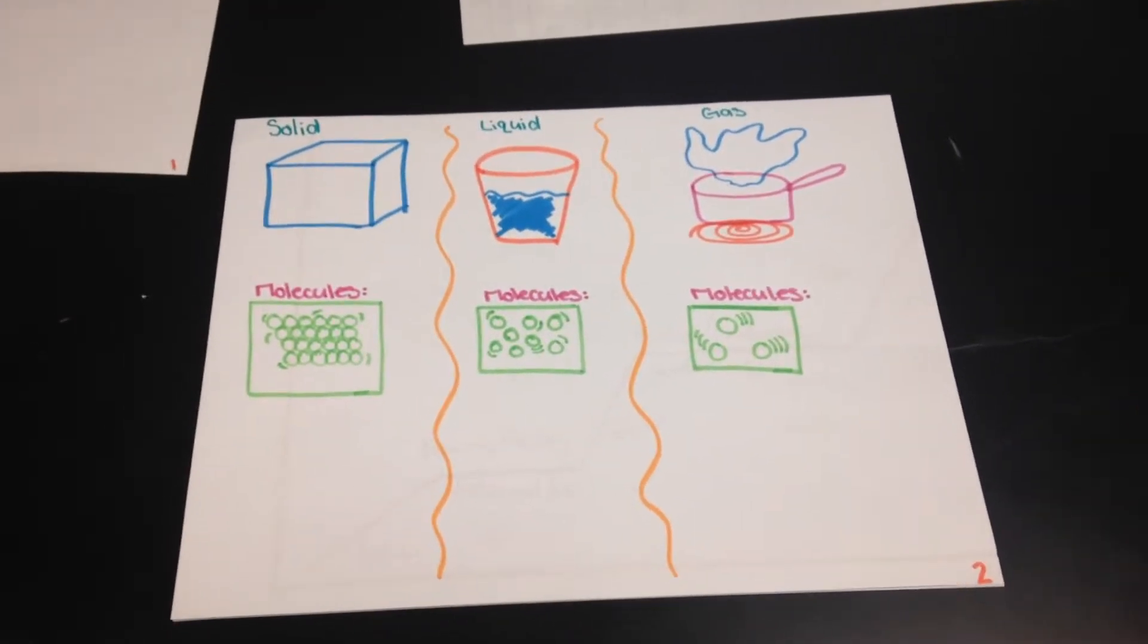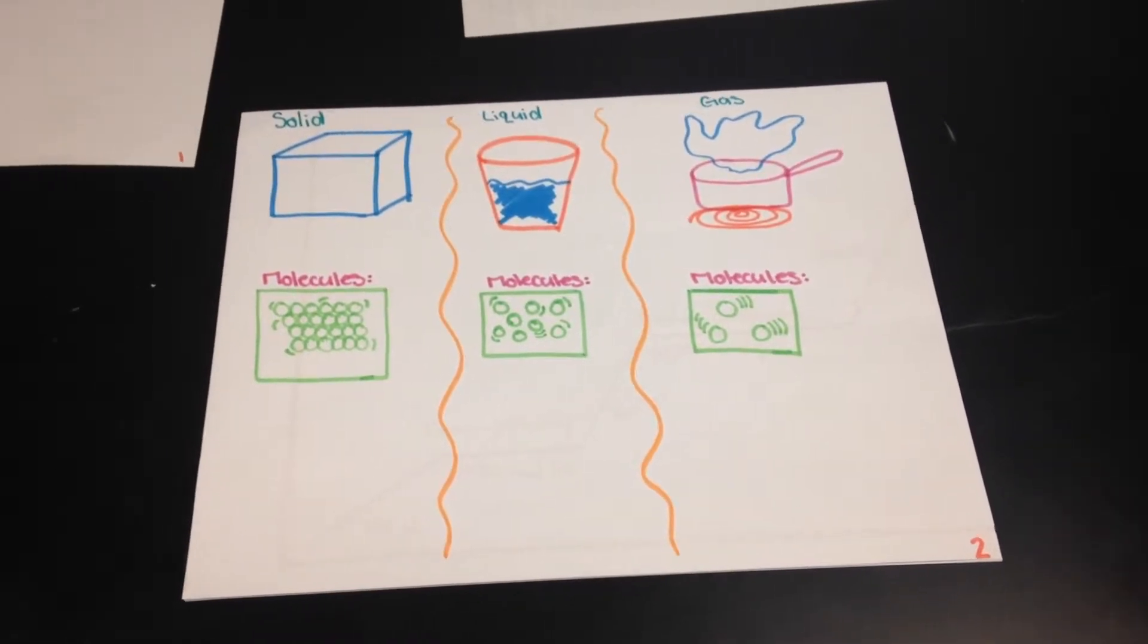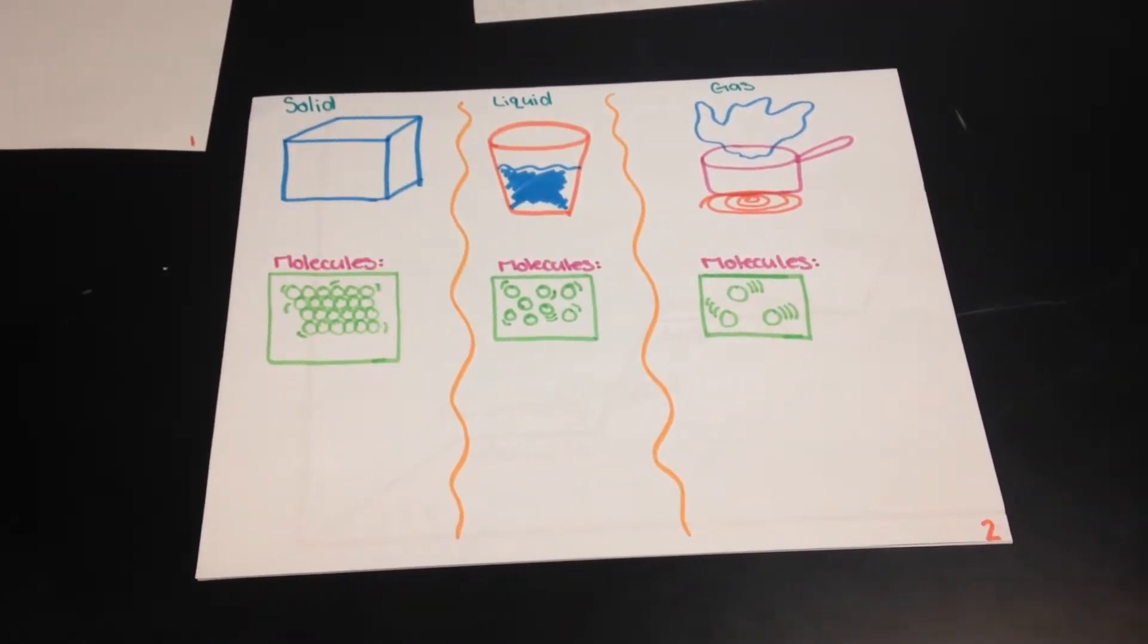There are three different types of matter: a liquid, a gas, and a solid.